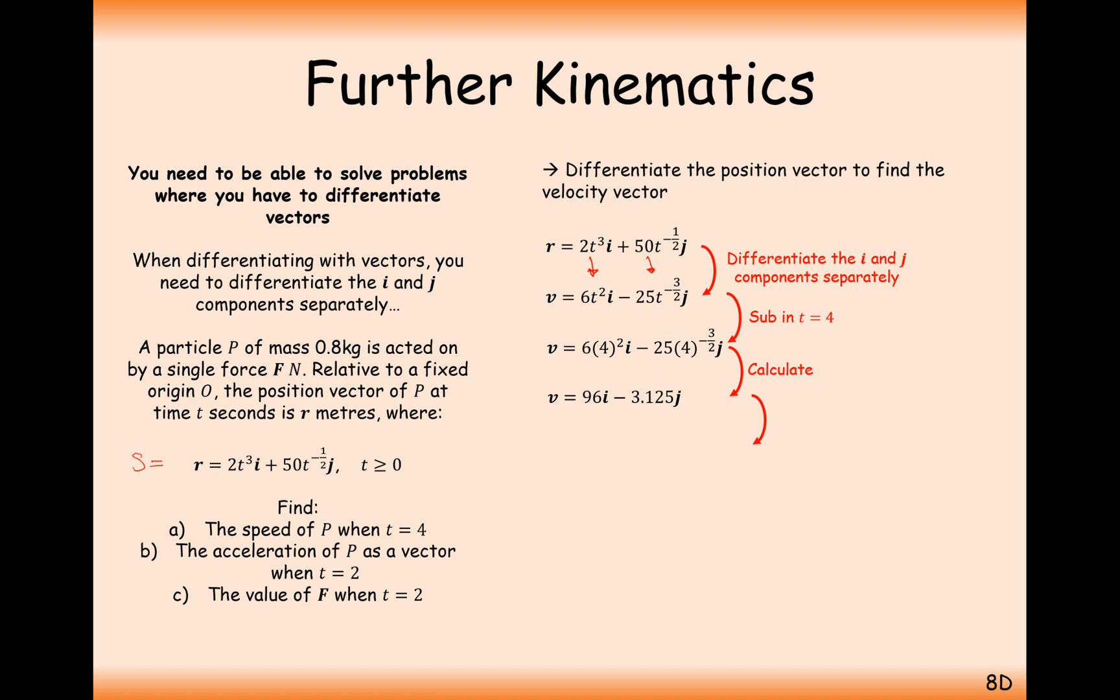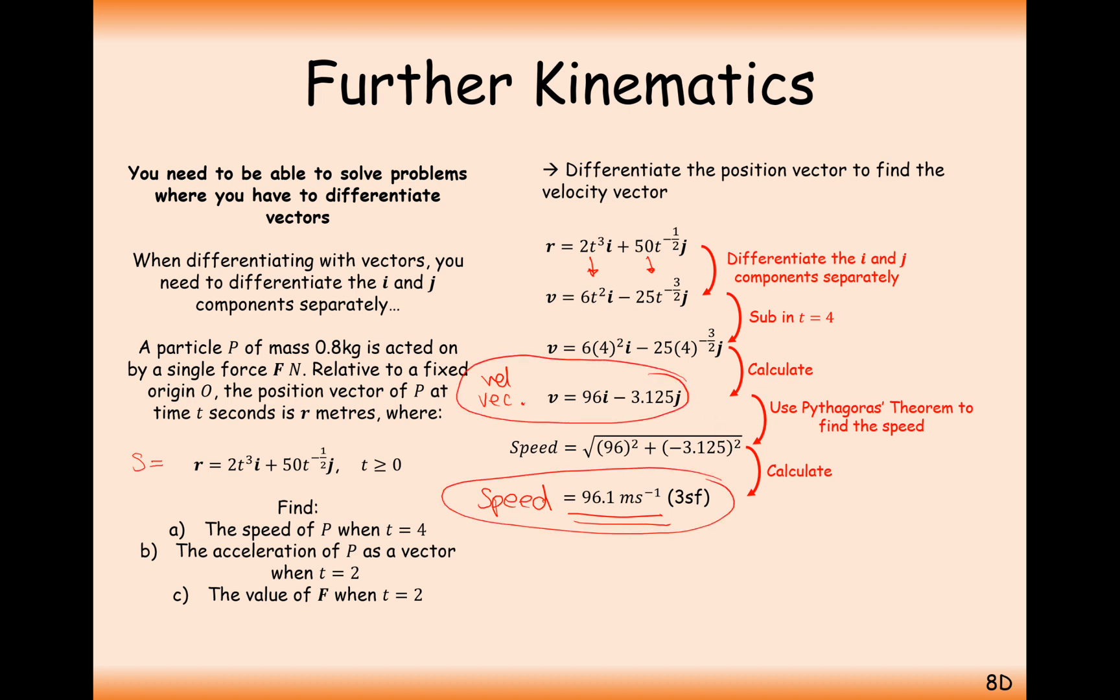But now we obviously need to work out speed. The way we go from a velocity vector to a speed value is by doing a bit of Pythagoras calculation. It's the magnitude of the velocity vector. So doing the Pythagoras calculation there, you get 96.1 meters per second as a speed. And hopefully we've got the hang of this by now. This thing here is speed and this thing here is a velocity vector. It's a case of Pythagoras theorem to move from the velocity vector to the speed.